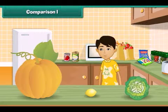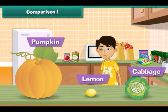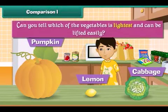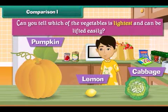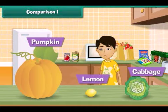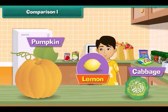Sandy has a pumpkin, a cabbage, and a lemon. Can you tell which of the vegetables is lightest and can be lifted easily? Yes, the lemon is lighter than the other two vegetables. He can easily lift a lemon.